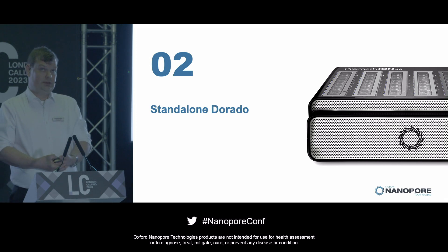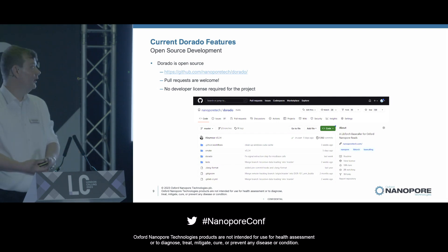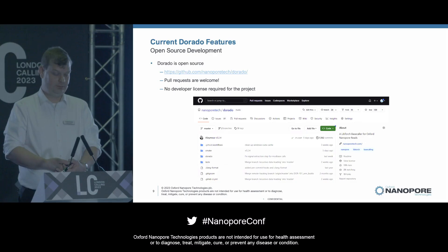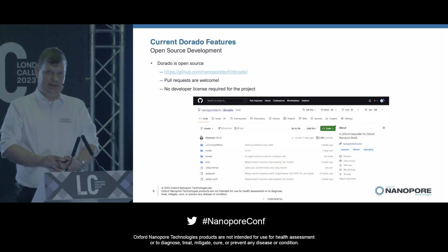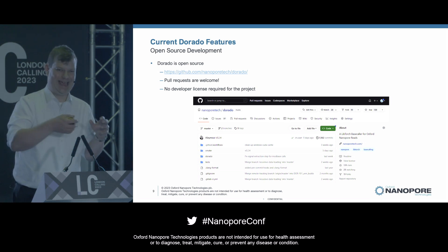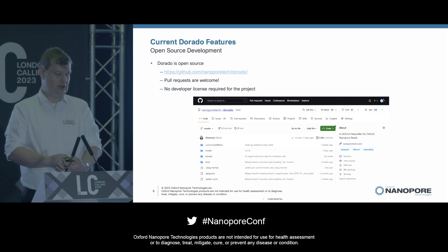We released Dorado 0.3 yesterday. So what is Dorado? The first thing to say about it is it's open source. You can go on to GitHub and take a look at all the source code and download it from there. Pull requests are very welcome, so if you're a developer we'd love for you to contribute. And it's a little bit different to previous base callers in that there's no developer license required to get access to the GitHub repo — it's fully open source, anyone can go and have a look.